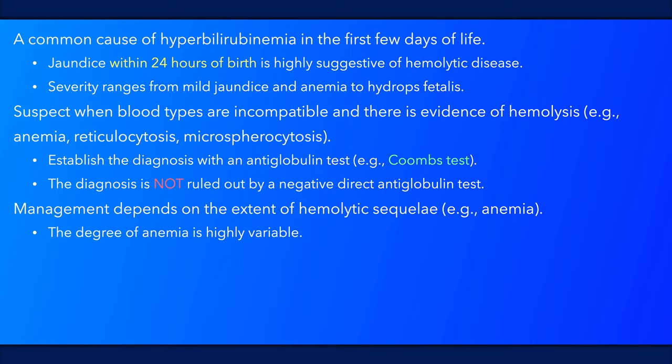The degree of anemia is highly variable, and somewhat counterintuitively, it does not correlate well with the total level of circulating maternal antibodies. Treatment is individualized based on the needs of the newborn. Asymptomatic infants without high bilirubin levels or risk factors for severe disease may be followed without immediate intervention. However, those with mild symptomatic anemia may require an exchange or simple transfusion, amongst other treatment options.